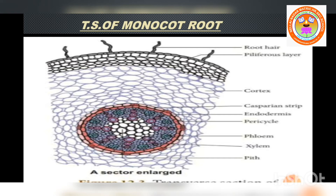The innermost layer of cortex is called endodermis — the innermost layer of cortex with characteristic casparian strips and passage cells. In the endodermis cells, the radial and tangential walls are deposited with suberin as secondary wall material. This is called casparian strips, named after Caspari who first noted the strips.